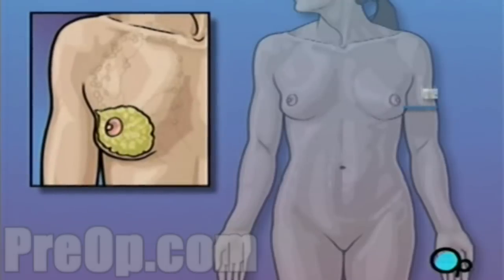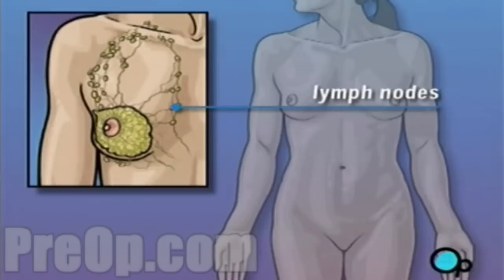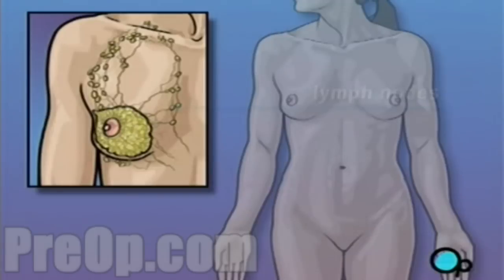Lymph nodes are small junctions that join the vessels that make up the lymphatic system. The lymphatic system circulates a bodily fluid called lymph in the same way that the circulatory system carries blood.